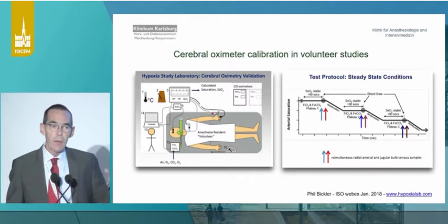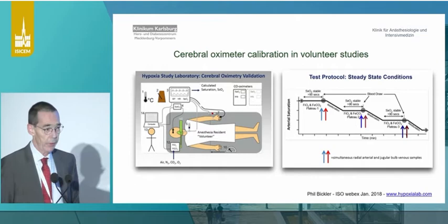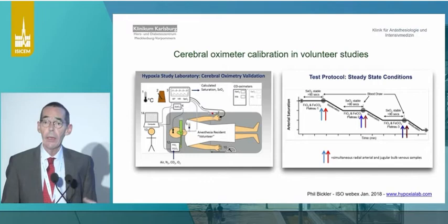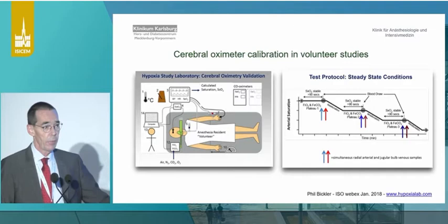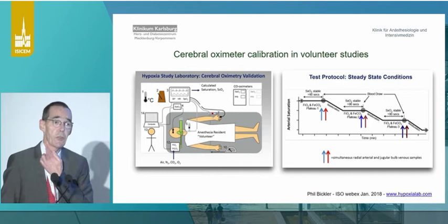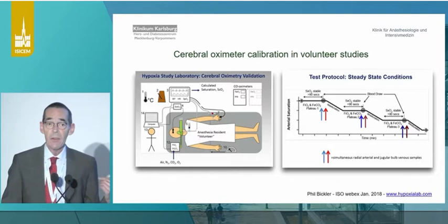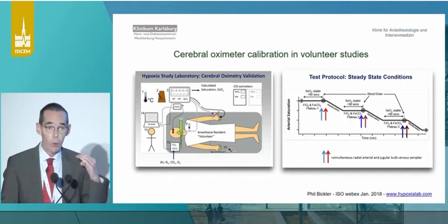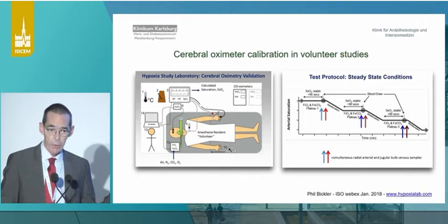The devices are calibrated based on the assumption of the distribution of arterial to venous blood in volunteer studies. This is accomplished typically by having volunteers breathe down to low oxygen levels — usually healthy students — to calculate the difference of the arterial and jugular bulb saturation according to the A/V ratio, thereby calibrating the system. So we get an estimate using this technology — not a real number. You shouldn't compare tissue PO2 with the numbers you get here because it's really an estimate.